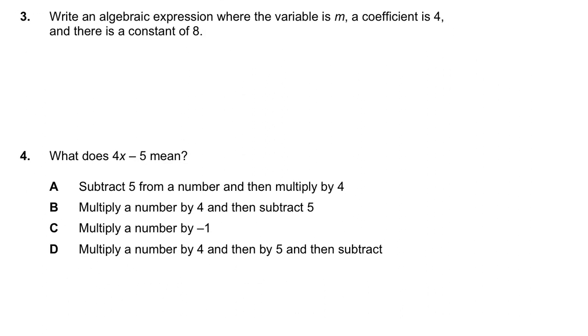Question 3 says, write an algebraic expression where the variable is m, a coefficient is 4, and there is a constant of 8. Now, it has to be an expression, not an equation, so there are no equal signs in this. The variable should be m, and a coefficient is 4. A coefficient is the thing that you multiply the variable by. So, I could write 4 times m, and I could just add 8, and that would be doable.